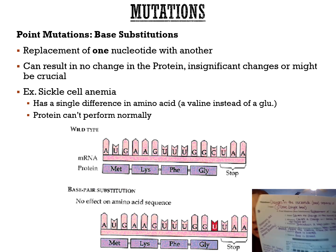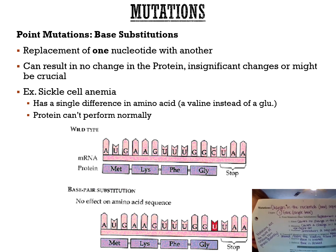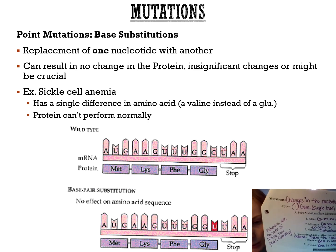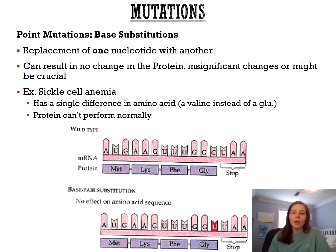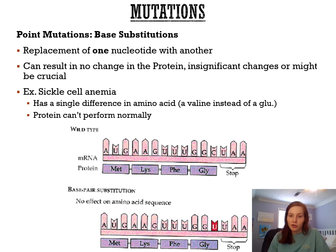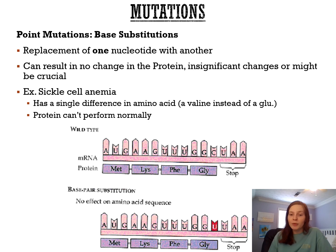Now we'll talk about point mutations first. Point mutations are when you replace one nucleotide with another — a single base, a single nucleotide. There are three types: one results in no change in the protein, one creates a stop codon, and one changes just one amino acid. A key example of a point mutation is sickle cell anemia, caused by a single amino acid change.